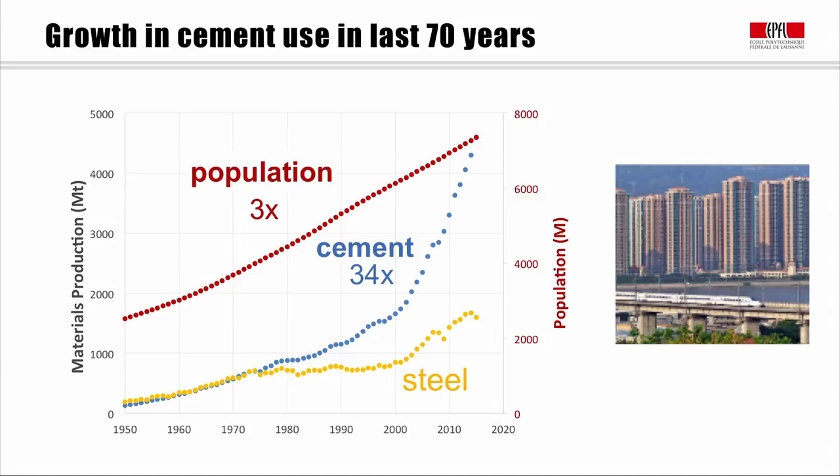We should not view this negatively because this development has lifted a lot of people out of poverty. It's provided them with decent homes, with roads and railways to get around. But we certainly cannot imagine that this growth in demand for cement is going to slow down, because there are many other parts of the world where people still lack decent housing or transportation systems.